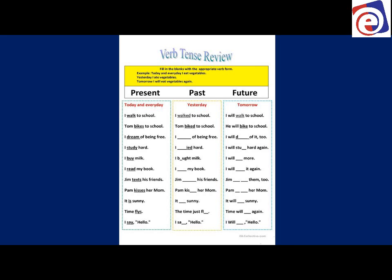'Tom bikes to school.' 'Bikes' is an action word — the action of riding the bicycle. 'Tom biked to school this morning.' Notice 'biked' also has the T sound at the end, just like 'walked.' 'He will bike to school tomorrow.'